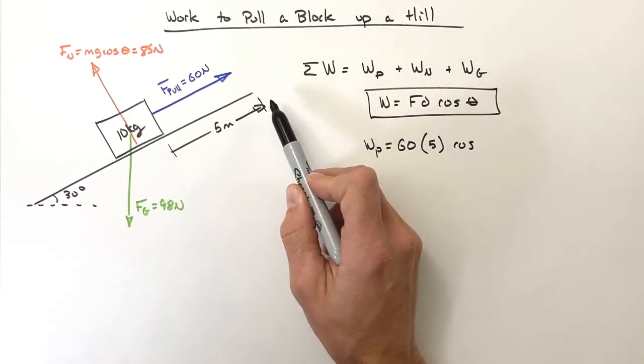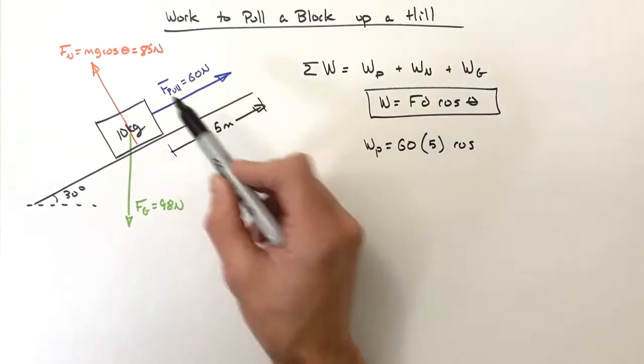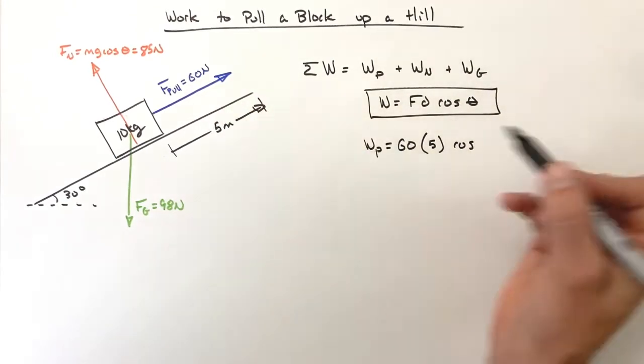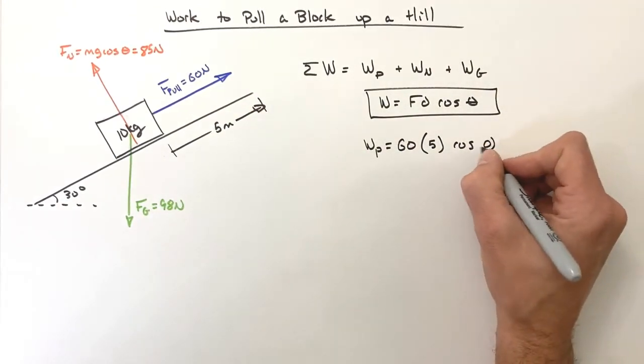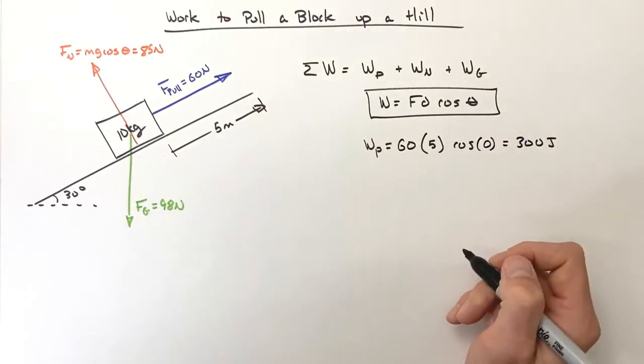And the displacement is straight up the hill, so even though both of these are tilted at an angle, the two forces are parallel to each other - that is to say the angle between them is zero. So the work by the pull force is 300 joules.